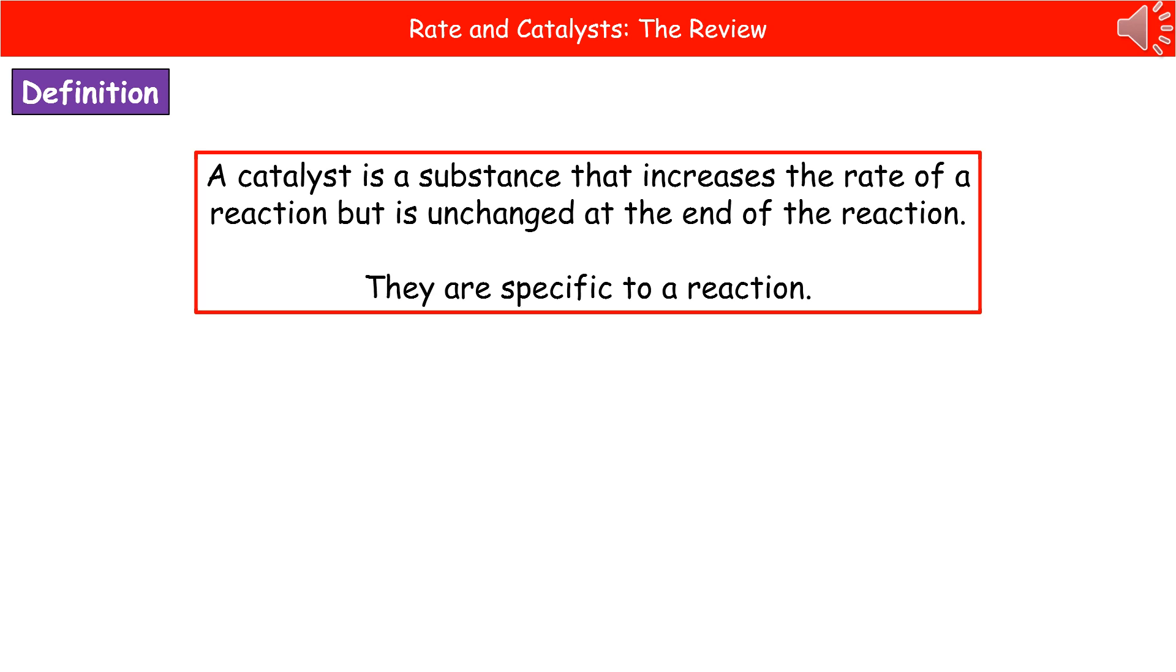A catalyst is a substance that increases the rate of a reaction but is unchanged at the end of the reaction. Make sure you remember the second part to that definition. Don't just say it increases the rate of a reaction, but that it also remains unchanged. That means the mass will be the same, the color will be the same.